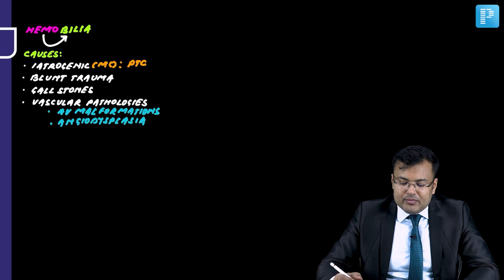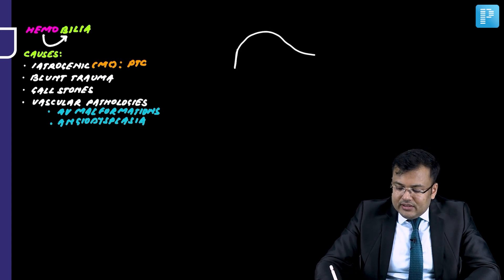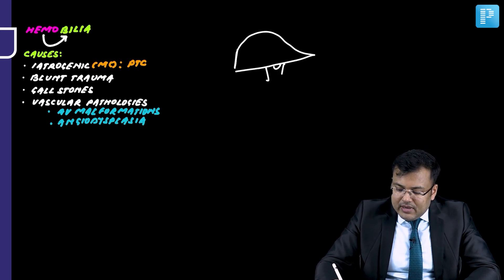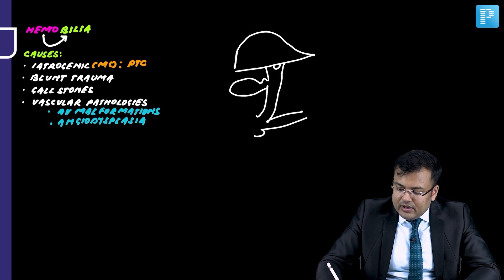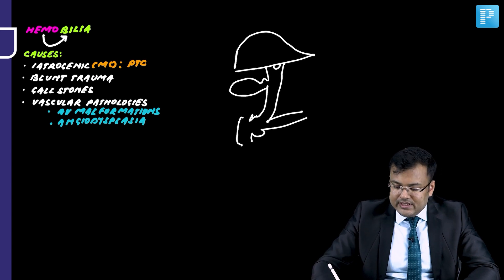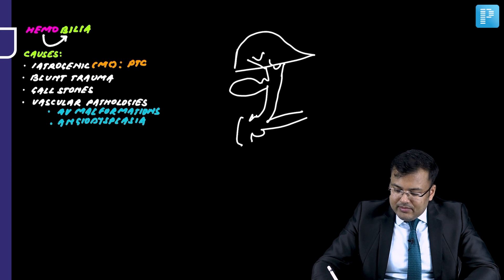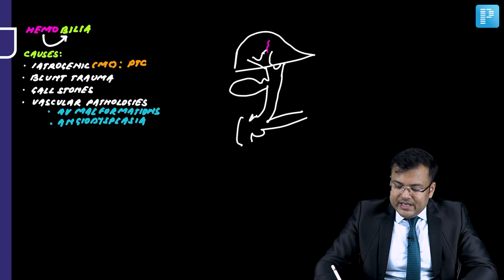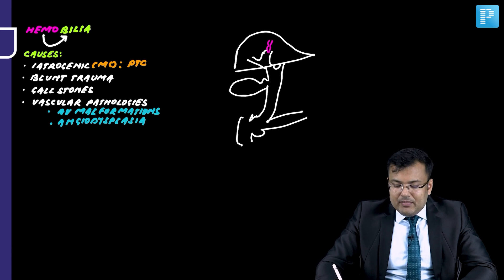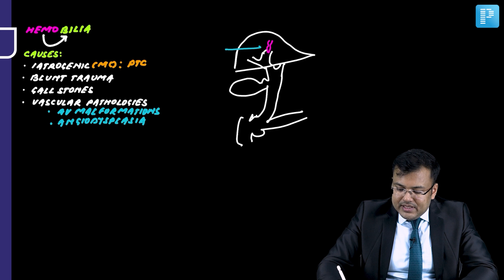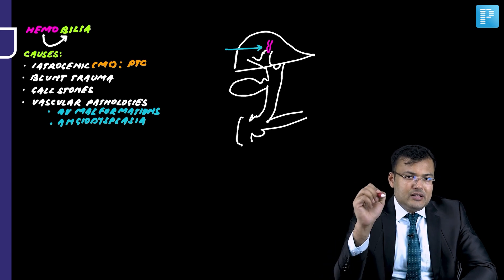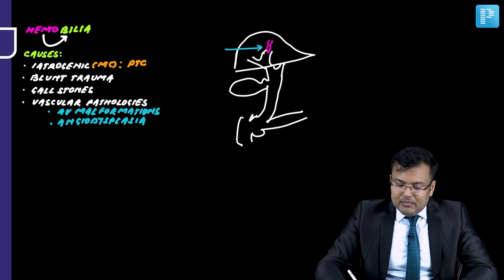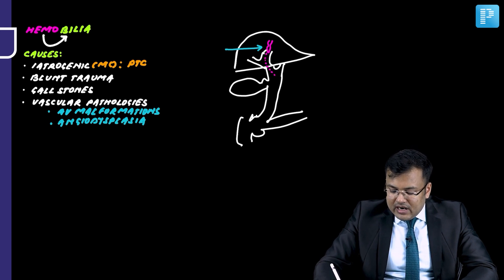During PTC, looking at the anatomy: this is the liver, the bile duct, the gallbladder, the pancreatic duct, and the duodenum with the intrahepatic bile ducts. PTC is performed blindly, so during the procedure a minor artery or vessel can be injured when the needle is inserted blindly.